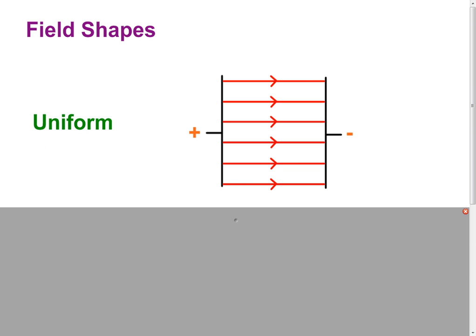So here we've got some different field shapes. Now this is in the context of electric fields, but don't let that put you off. You can spot a uniform field a mile off because it's made up of straight field lines that are equally spaced. So here we've got a uniform electric field between two charged plates, a positive and a negative plate.